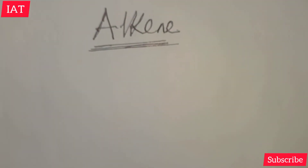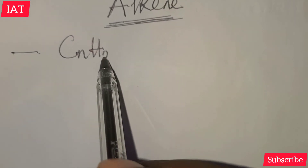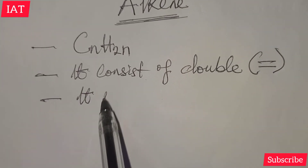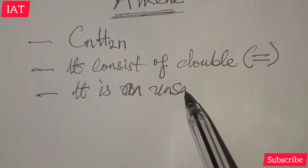Now, the second class of aliphatic hydrocarbon is alkene. Alkene has a general formula of CₙH₂ₙ. It consists of double bonds, which makes it an unsaturated hydrocarbon.